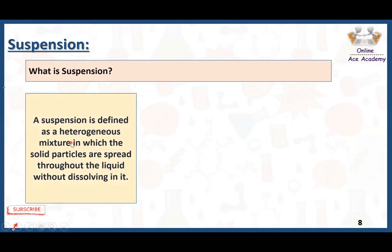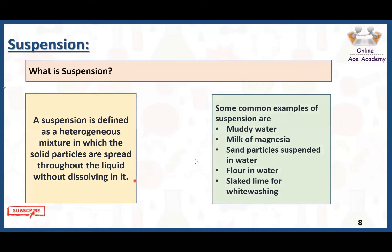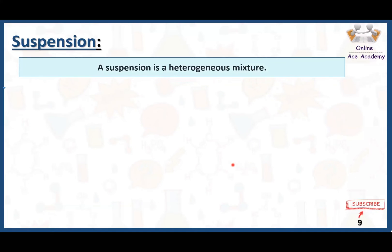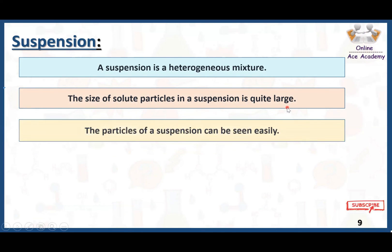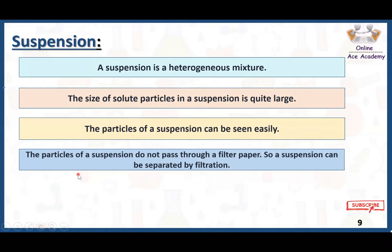A suspension is defined as a heterogeneous mixture in which the solid particles are spread throughout the liquid without dissolving in it. Unlike solutions and colloids, the particles of a suspension are big enough that we can see them with the naked eye. Some examples of suspension are muddy water, milk of magnesia, sand particles suspended in water, flour in water, and slaked lime for whitewashing. The size of the solute particles in a suspension is quite large and visible to the naked eye.